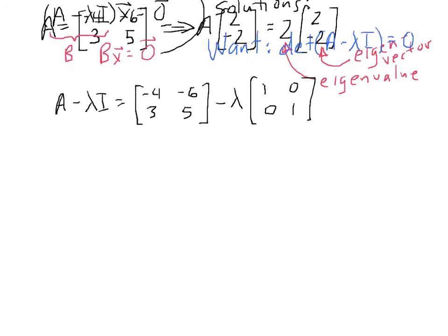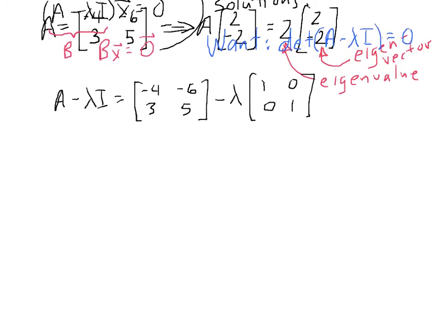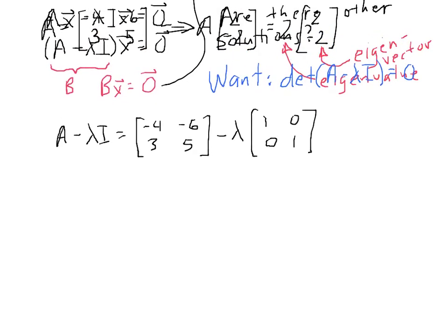So let's move all this stuff up so we can work here. It looks like I'm going to have a little problem there with some things on top of each other, but I think we can work around that. So now what we get is we have negative 4, negative 6, and 3, 5 minus lambda, 0, 0, lambda. Okay, and that results in the matrix whose entries are negative 4 minus lambda, negative 6, 3, and 5 minus lambda.